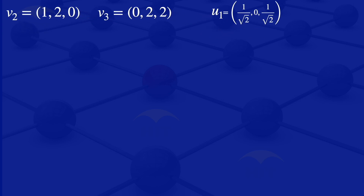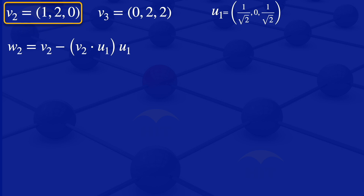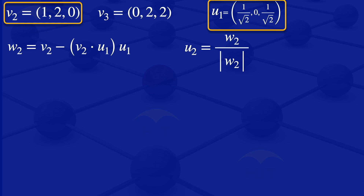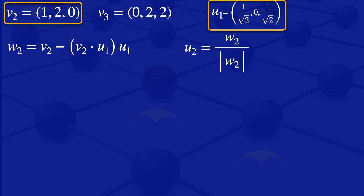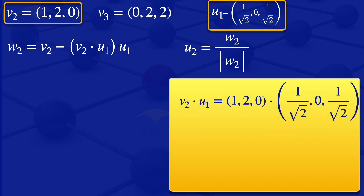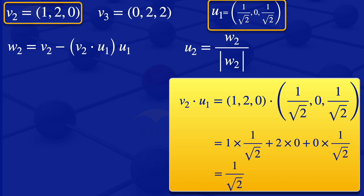The next step is to obtain U2. To get U2, we first have to evaluate W2. W2 equals V2 minus the inner product of V2 and U1, multiplied by U1. Our V2 is 1, 2, 0, and U2 is given by W2 divided by the norm of W2. We first evaluate the inner product of V2 and U1: multiplying corresponding elements gives 1 times 1 over root 2, plus 2 times 0, plus 0 times 1 over root 2, which equals 1 over root 2.